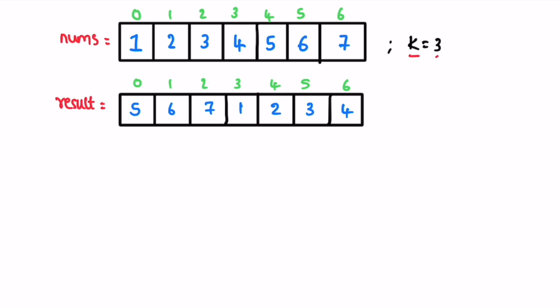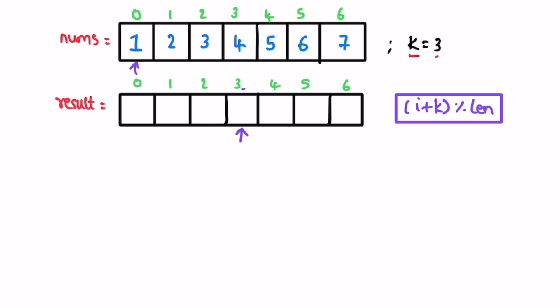So how are we going to fill our output array? We iterate through the input array from left to right. We access each element and put it inside its respective position after rotating. The output index position is obtained using the formula (i + k) mod n. For i=0, k=3, and length 7: (0+3) mod 7 = 3, so we add that element at index 3.